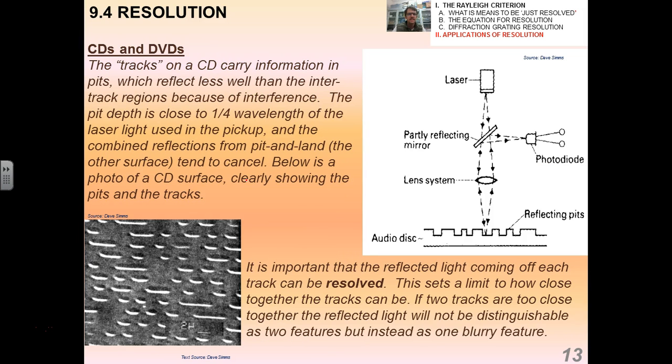All right, CDs and DVDs. We talked a little bit about diffraction pattern, like the rainbow pattern on a CD when light reflects off of it. We'll talk about this more later, but the tracks on a CD carry information which are in what we call pits. So there's a series of grooves, pits and lands. The pits reflect less well than the inter-track regions because of interference. The pit depth is close to one quarter of the wavelength of the laser light used in the pickup.